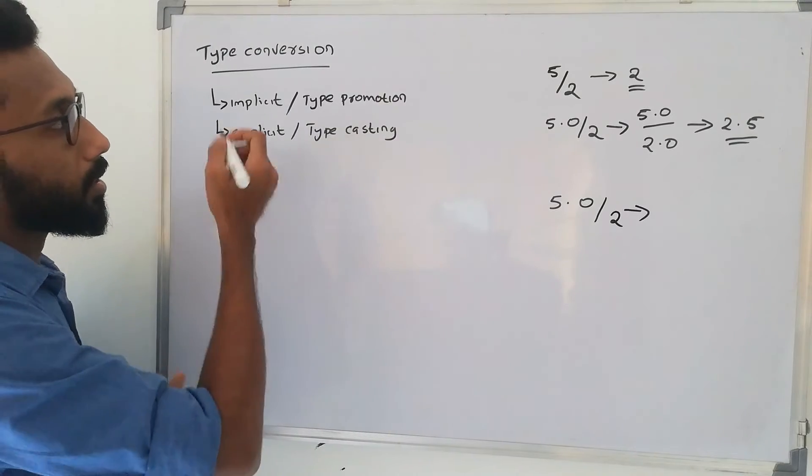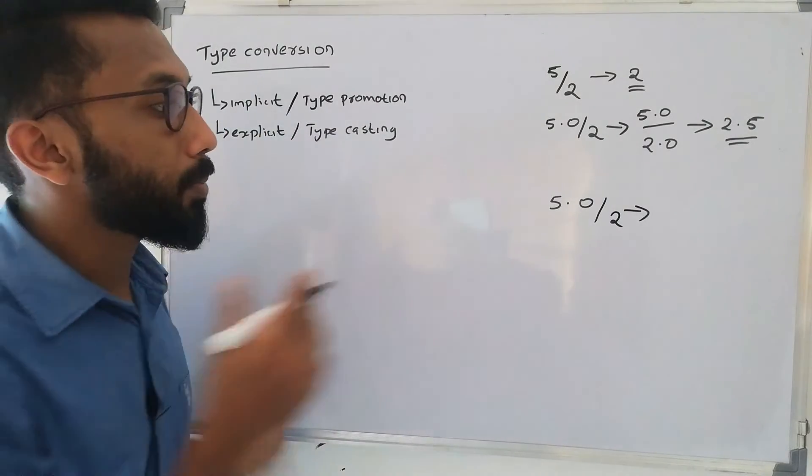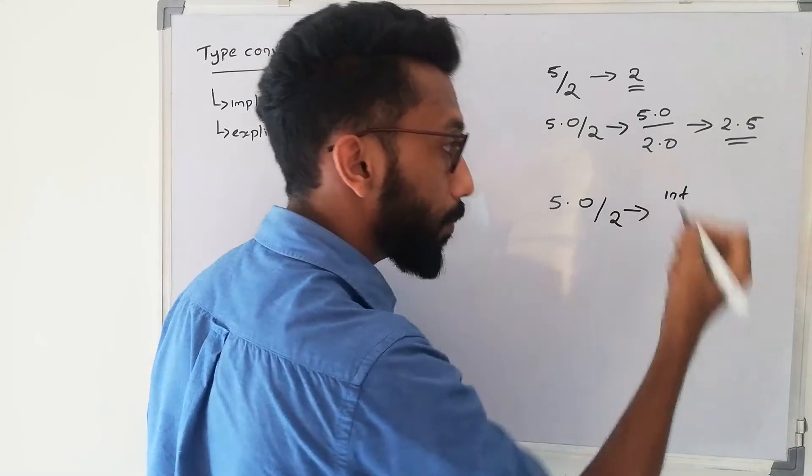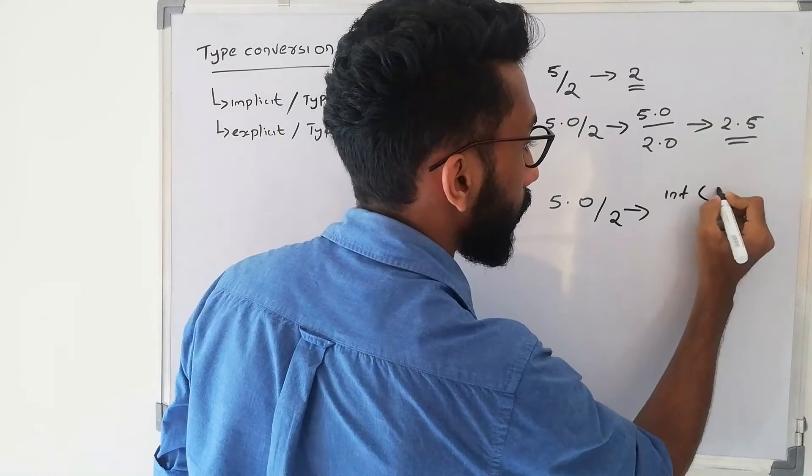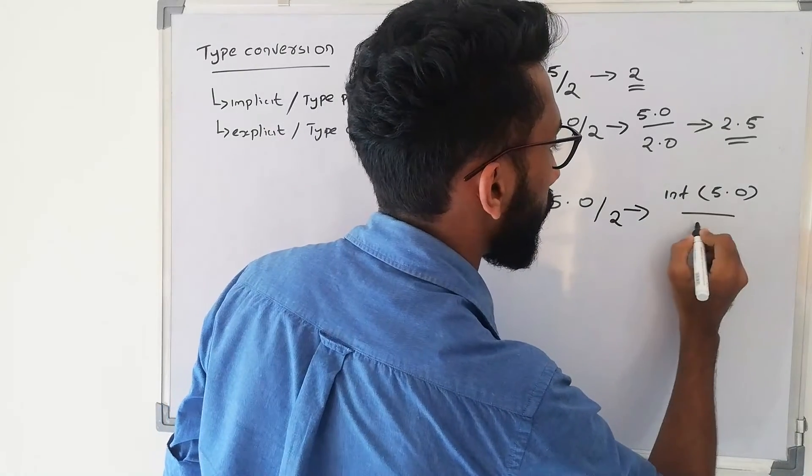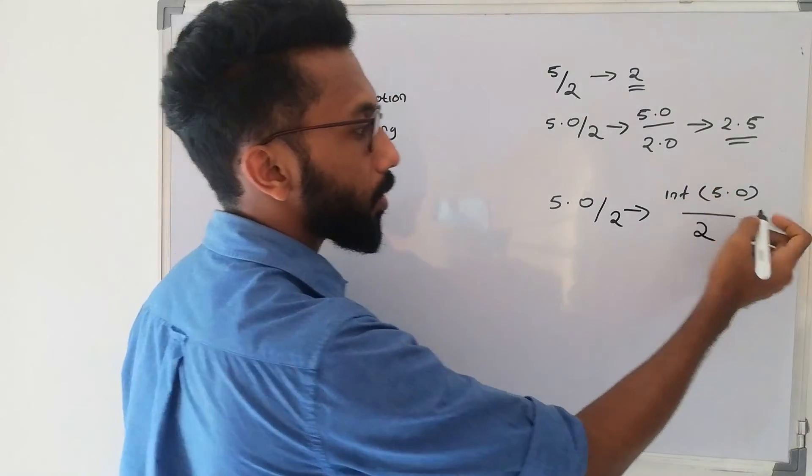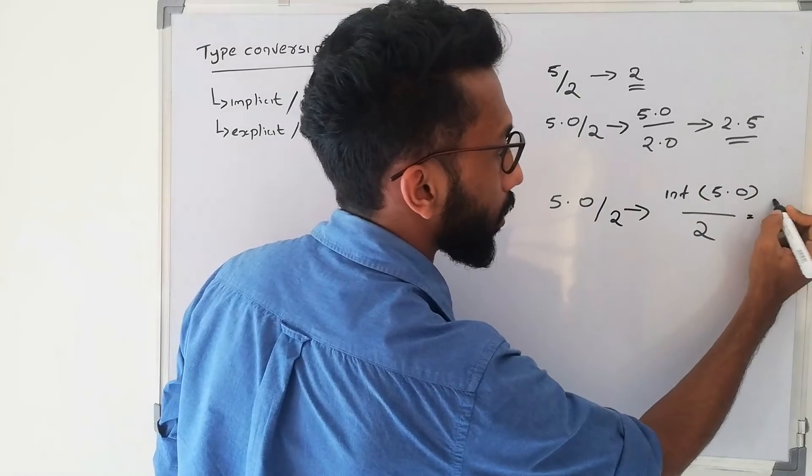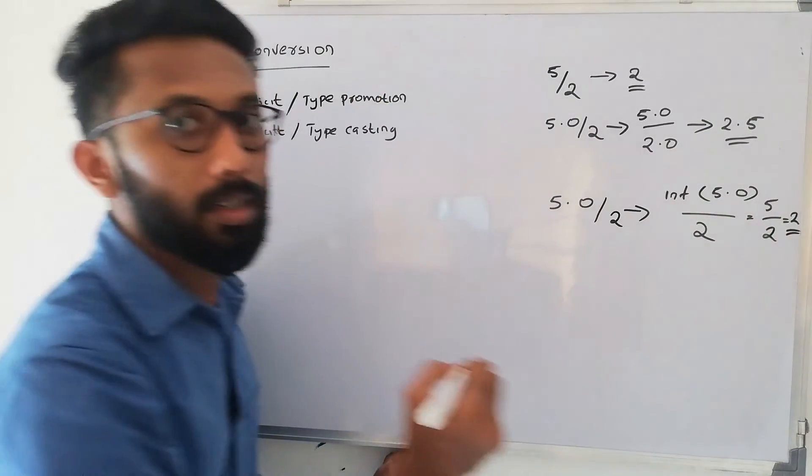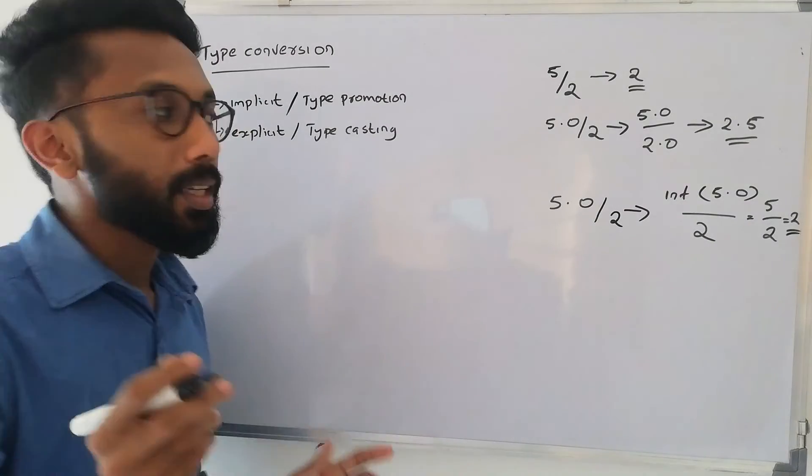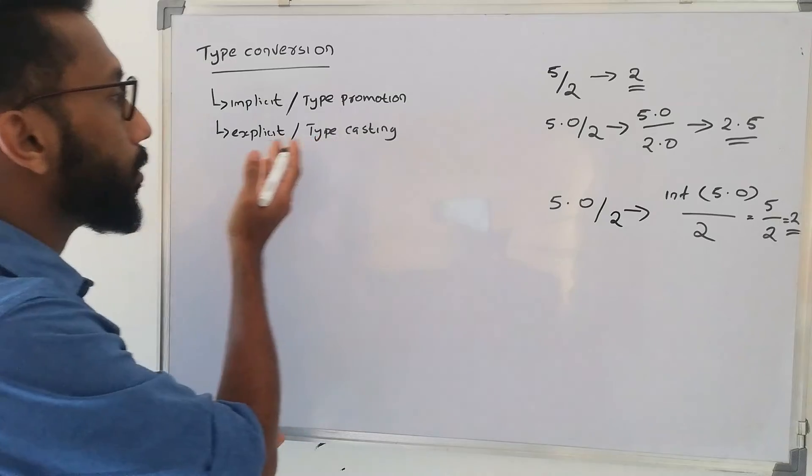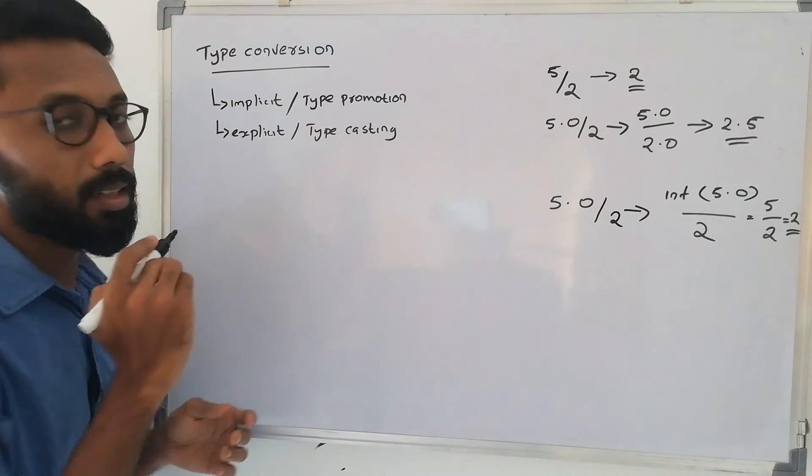If the user wants integer value returned, then this is explicit conversion. The user specifies the type. If we write 5.0 as integer divided by 2, the answer will be 2. This is explicit conversion or type casting.